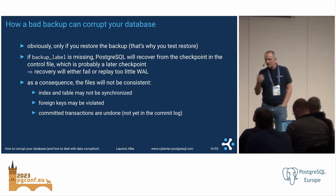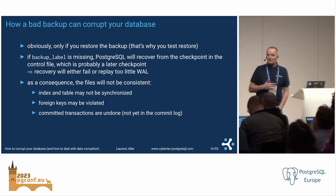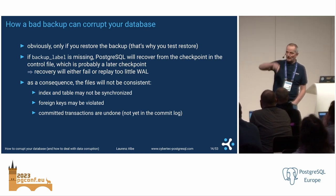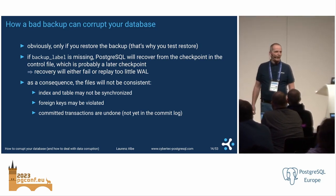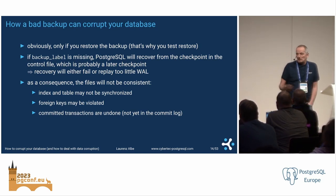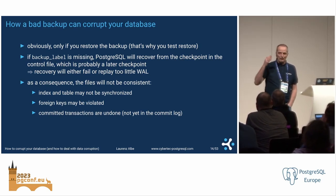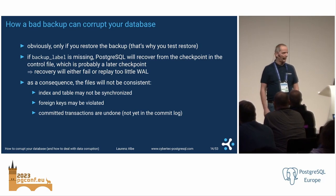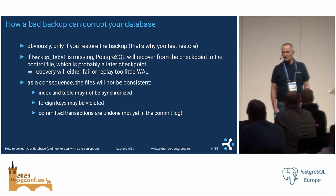What happens if a backup label is missing? Postgres will think it's a crash data directory, look for the checkpoint in the control file. But the control file was backed up after the start of the backup, and some checkpoints may have run in between — you recover from a bad position. If you're lucky, that fails with an error. If you're not lucky, it succeeds and you have a broken database.